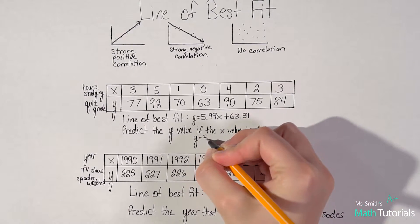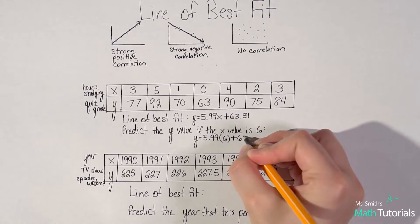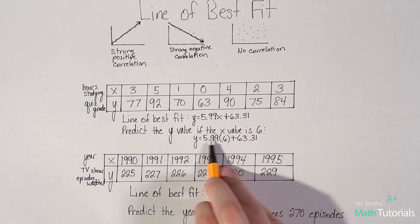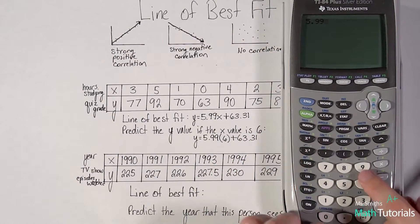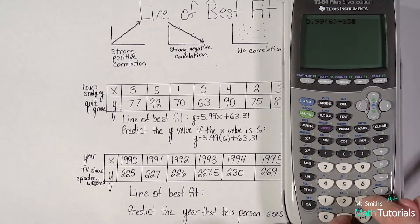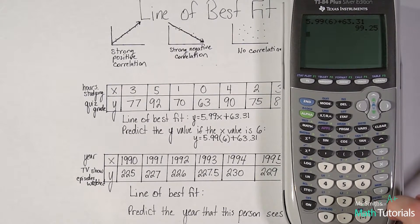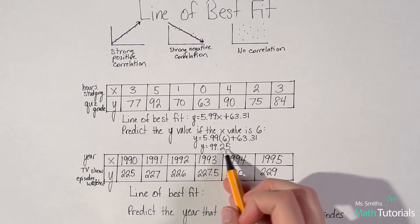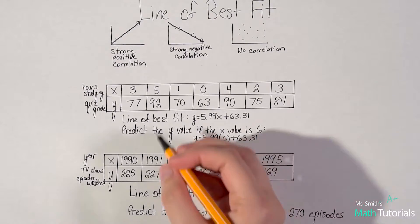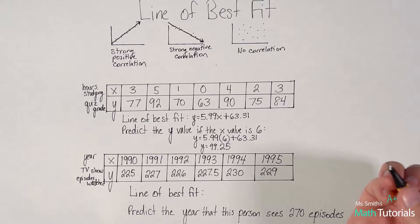We would do y equals 5.99 times x, but we're saying x is 6, plus 63.31. So, I can put that straight in my calculator to see what y equals. 5.99 times 6, plus 63.31. That would give me a quiz grade of 99.25. Rounding to the nearest whole number, we would say that if the student studied 6 hours, they would get a predicted grade of 99%.